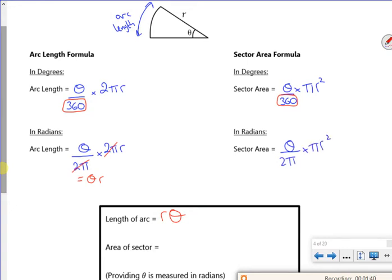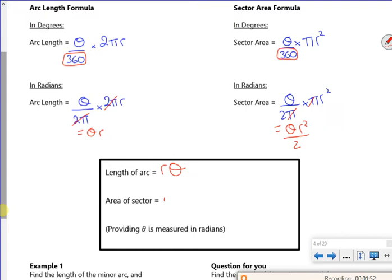The π's will cancel, and I get θr² over 2. Now what we tend to write it as is ½r²θ. And θ has to be in radians, because I've used the 2π for it.